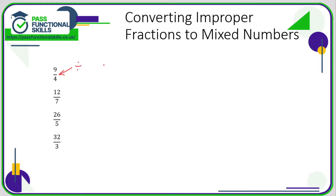Nine over four means nine divided by four. How many fours go into nine? Four goes into nine twice, and there is one left over. The one left over is going to be one over the same bottom number as in the original fraction. So the answer is two and a quarter — nine quarters is the same as two and a quarter.